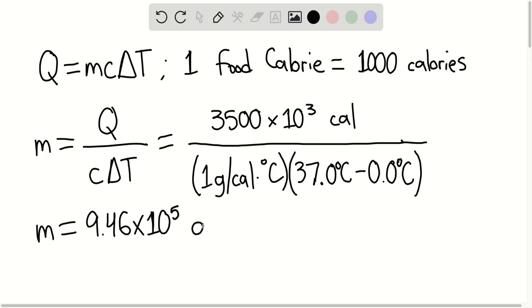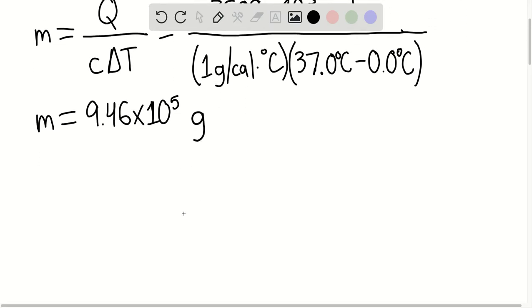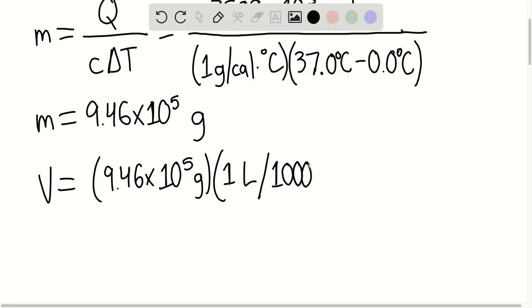Or we can find actually the volume, V, this would be equaling 9.46 times 10 to the fifth grams multiplied by 1 liter for every 1,000 grams. And we find that this is giving us approximately 94.6 liters of water.